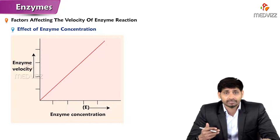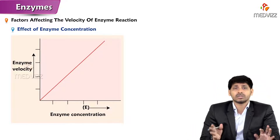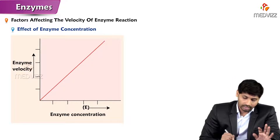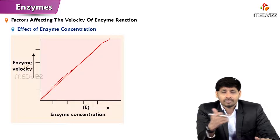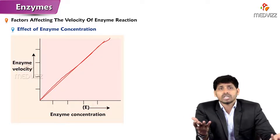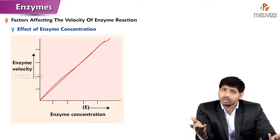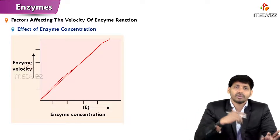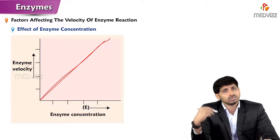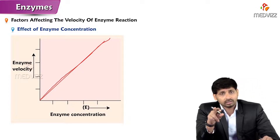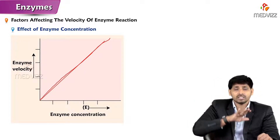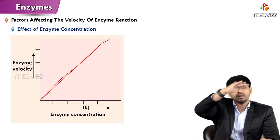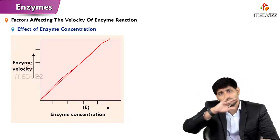The second factor is the effect of enzyme concentration. On the x-axis is enzyme concentration and the y-axis is enzyme velocity. If you increase the enzyme concentration, there is a straight line — meaning if substrates are available and you increase the enzyme concentration, substrates will bind and react, increasing the rate of reaction. So enzyme concentration has a direct effect. Unlike substrate concentration which gives a hyperbola, enzyme concentration gives a straight line — there is only a plateau in the substrate concentration graph, not a decline.